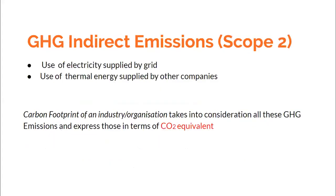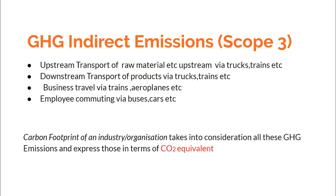In Scope 2, electricity supplied by the grid is taken as indirect emissions. If you are buying thermal energy from outside — say, taking steam from a nearby unit — that is also considered an indirect emission in Scope 2. For Scope 3, the transport of raw materials and finished products must also be considered. So the scope of what is included in Scope 1, Scope 2, and Scope 3 should be clear.